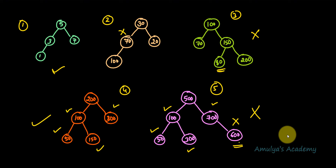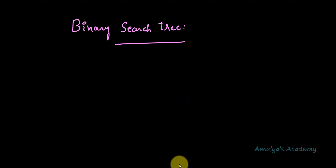Now we know what a binary search tree is and how to identify one. When we use a balanced binary search tree, insertion, deletion, and searching operations can be performed efficiently because binary search trees are an ordered data structure. When we insert a new value, nodes are placed in an orderly fashion. With data arranged in proper order, any operation becomes much easier and can be performed more efficiently.